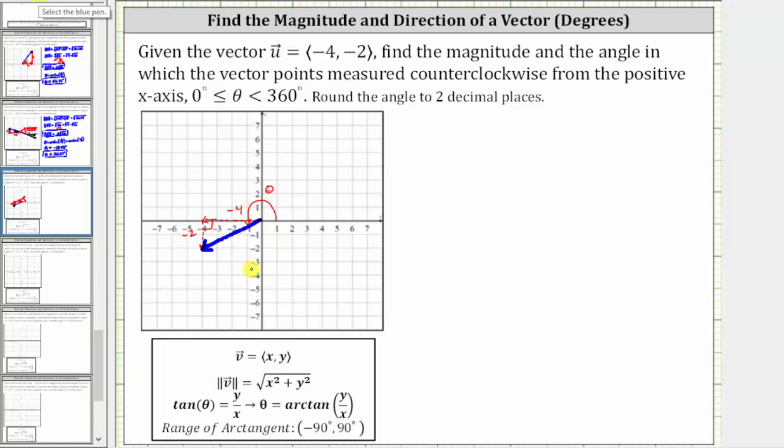Let's begin by determining the magnitude, where the magnitude of vector u equals the square root of the quantity the square of negative four plus the square of negative two,